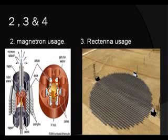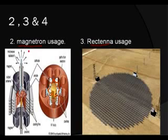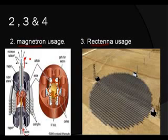So we have to go for an alternative: we convert this electricity into some other form, transmit it, and then reconvert it on Earth. For this, we use two special devices called a magnetron and a rectenna. A magnetron is a special device that takes electricity as input and converts it into a microwave beam — a radio wave beam — as output. The collected solar energy is converted into electricity, and then this electricity is converted to radio waves by the magnetron.